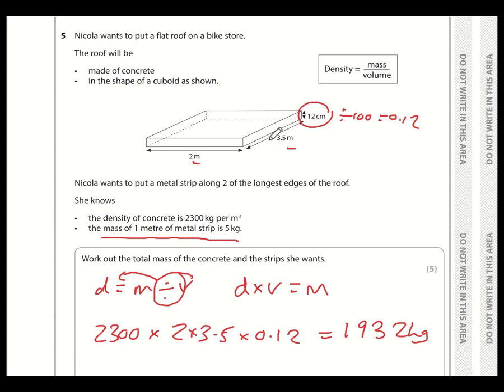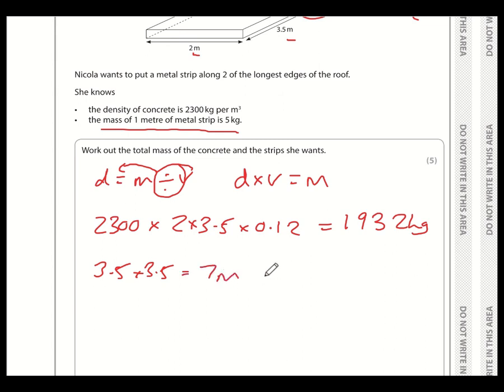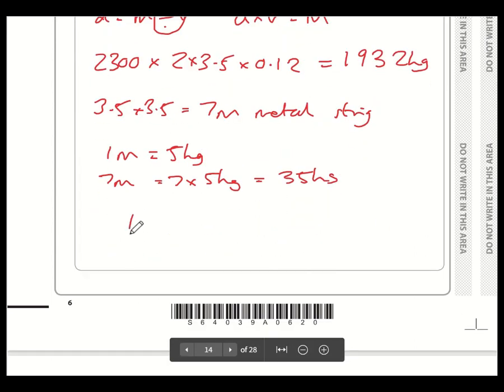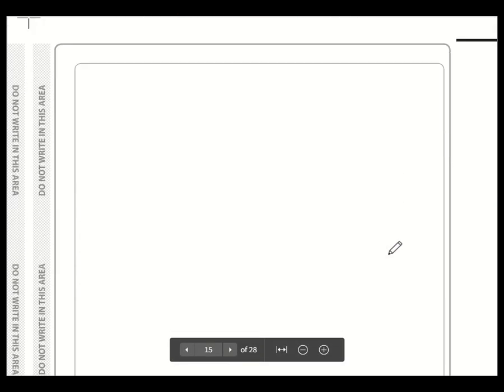Now we also need to work out the mass of the metal strips. So Nicola wants to put a metal strip along two of the longest edges of the roof. So we've got, that's the 3.5 meter side. So 3.5 plus 3.5 is 7. Probably should write that down. 3.5 plus 3.5 equals 7 meters of metal strip. Now we know that one meter equals 5 kilos. So 7 meters is going to be 7 lots of 5 kg. So that's the 35 kilos. So therefore the total weight is going to be the 1,932 plus the 35, which is 1,967 kilos. And that's the final answer, 1,967.